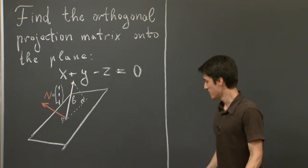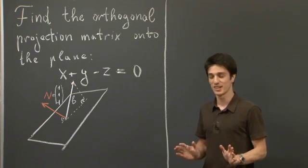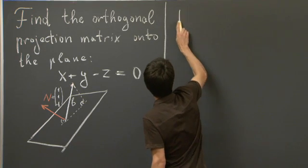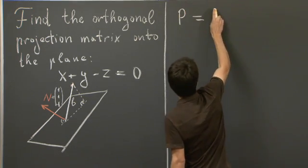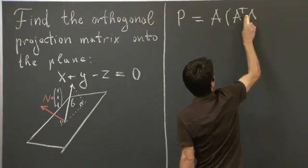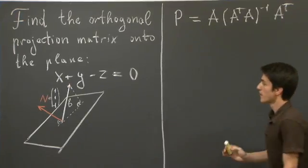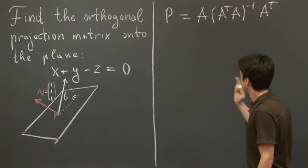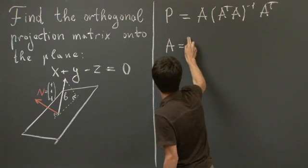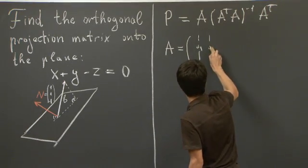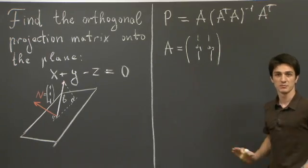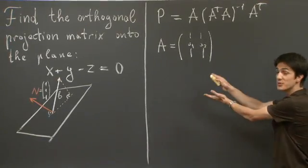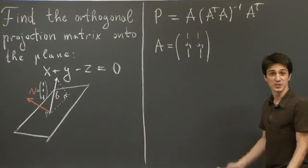OK, so in lecture, Professor Strang derived in meticulous detail the formula for the projection matrix. It's given by the following slightly complicated expression: A times A-transpose A inverse A-transpose, where A is a matrix that somehow encodes the subspace we are projecting on. In particular, A has as its columns a basis for the plane we're projecting on. So essentially what we need to do is find two such vectors that span the plane and start computing with the matrix.